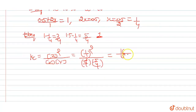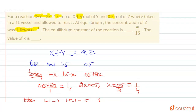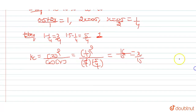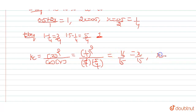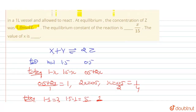That gives Kc equals 1 upon 15 by 16, which equals 16 by 15. Since Kc equals x by 15, we have 16 by 15 equals x by 15, therefore x equals 16.